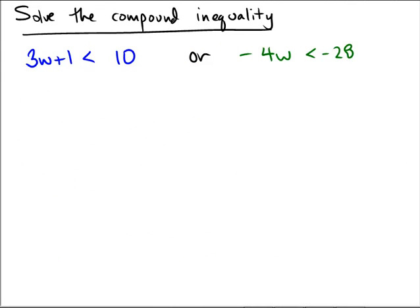Compound inequalities. These ones can be fun! 3w plus 1 is less than 10, or negative 4w is less than negative 28.